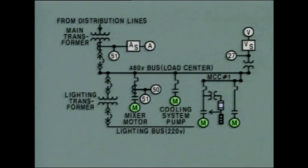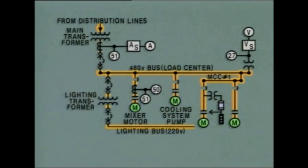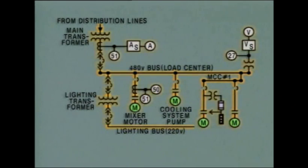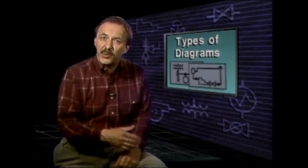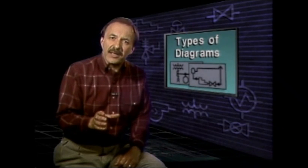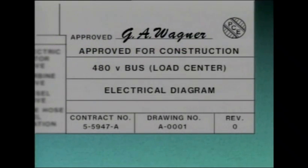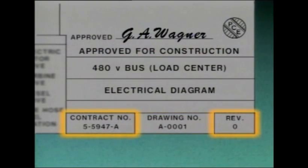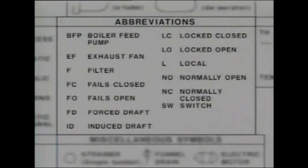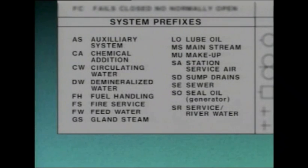The last type of diagram we'll look at is an electrical diagram. Electrical diagrams show the components and connections in electrical systems. Like flow diagrams and P and IDs, electrical diagrams use lines to represent flow paths — in this case the flow paths for electric current — and symbols to represent equipment in the system. In addition to showing equipment and connections, system diagrams usually include other information on how to interpret the diagram, contained in title blocks and legends. A title block identifies the diagram, usually including a description and an identification number. Legends generally give the meanings of symbols, abbreviations, and prefixes used on the diagram.